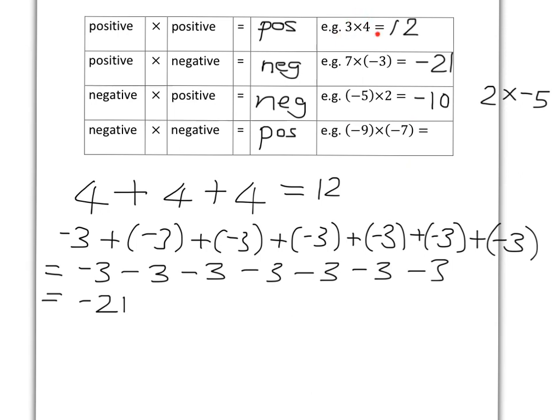With 3 lots of 4, we could understand it's 3 lots of 4—a 4, a 4, and a 4. And here, there's 7 lots of negative 3, which is 7 negative 3s, right? But negative 9 times negative 7 is hard to make sense of. We can't say there's negative 9 lots of negative 7. Very hard to explain simply what that means.